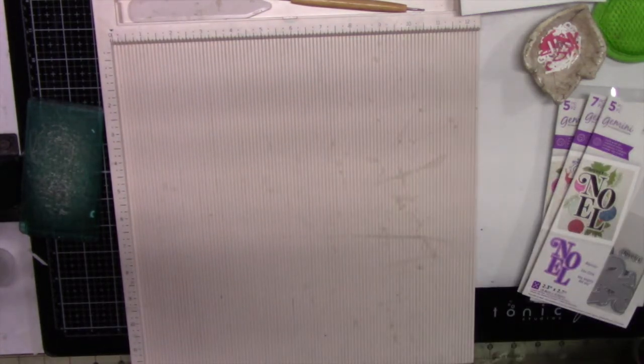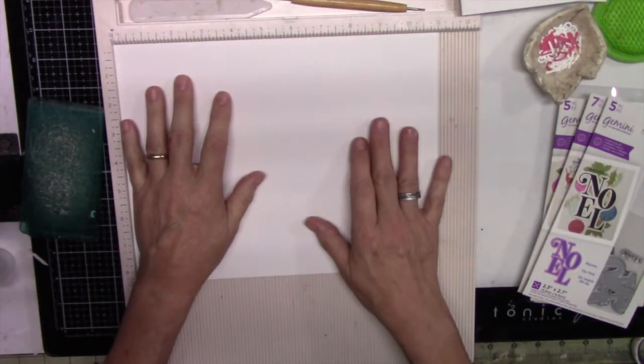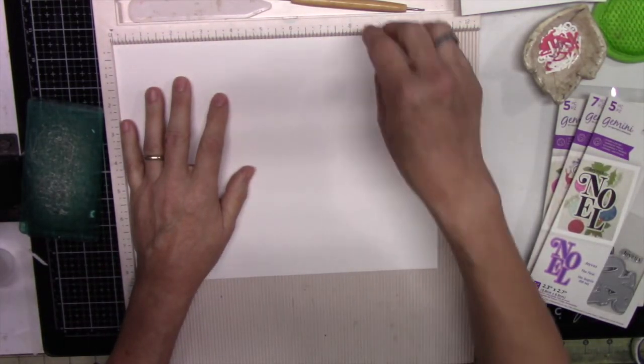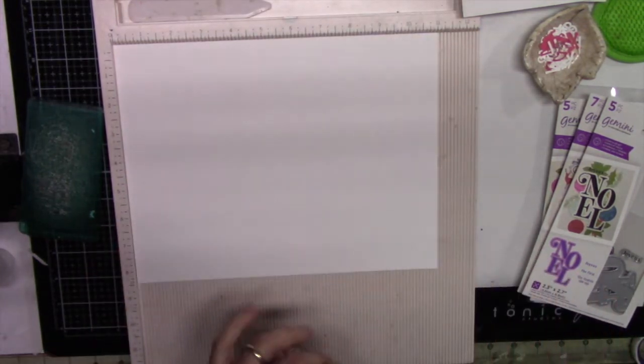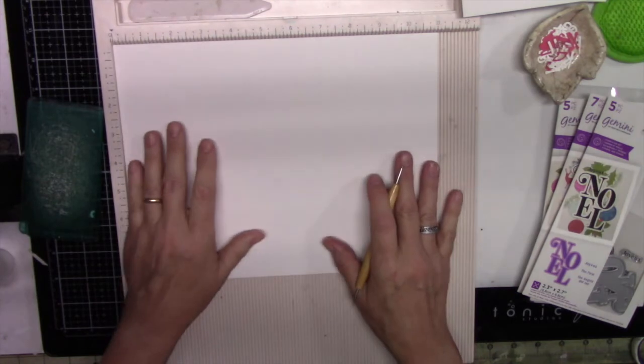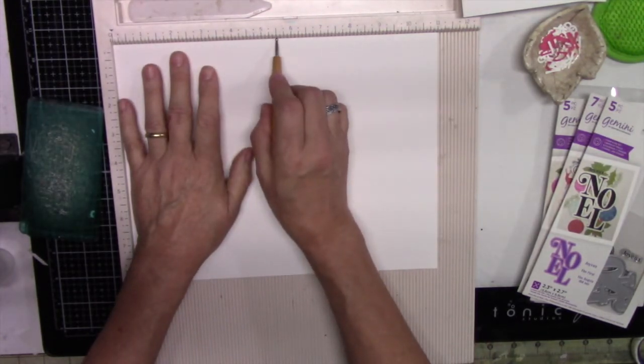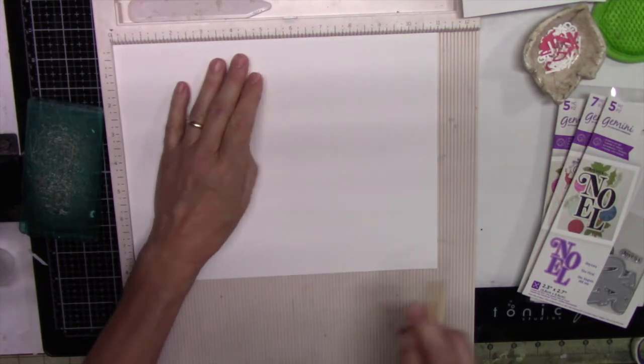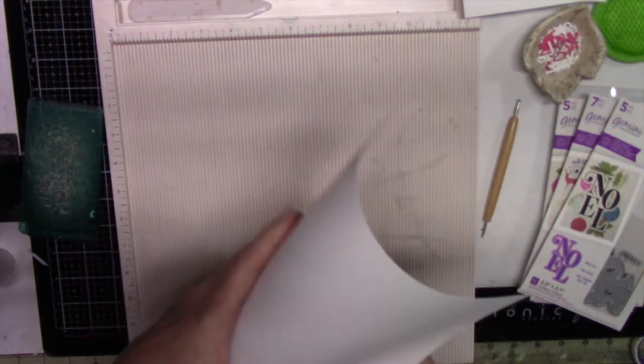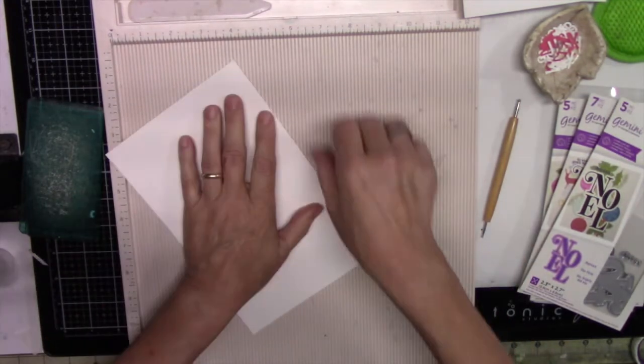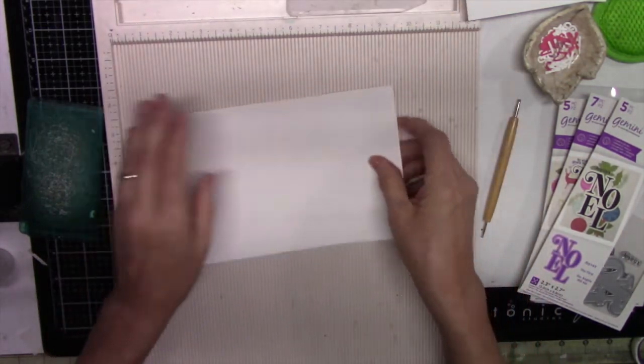So in order to do that I'm going to go ahead and use the big market stored scoreboard. Now there are some other scoreboards on the market, this one's no longer available, but you can find We R Memory has one and some other companies have one. So I go ahead and score my five and a half line and then I fold it in half and that creates a perfect fold.